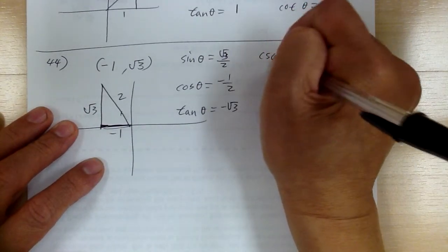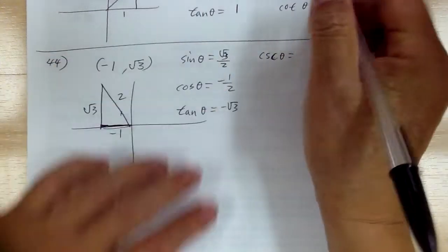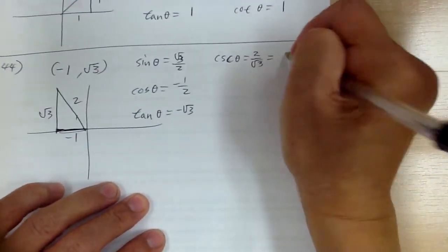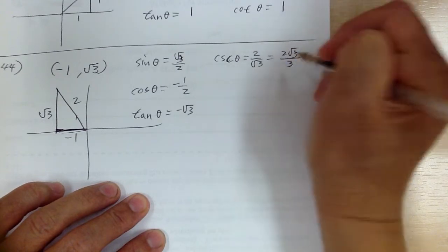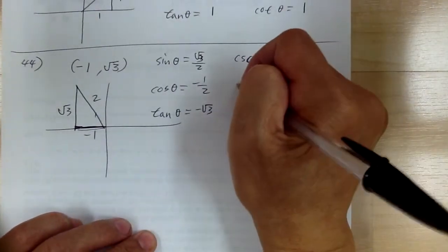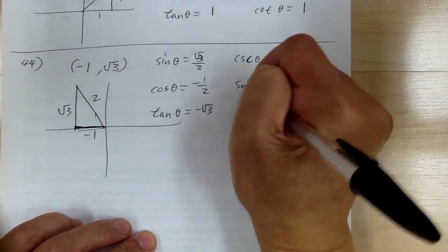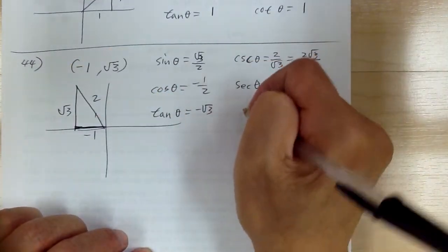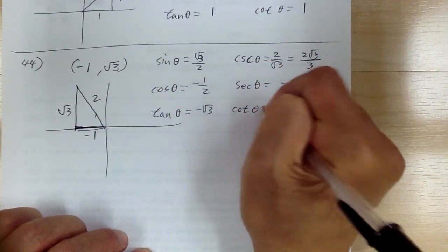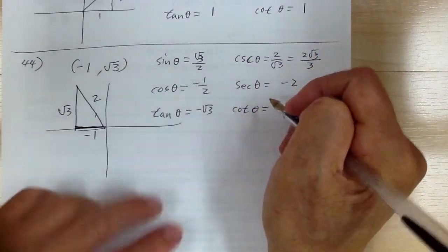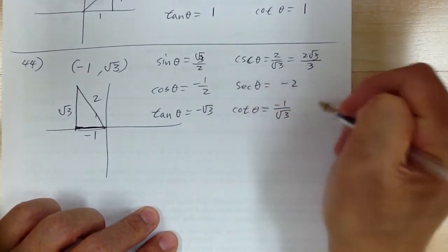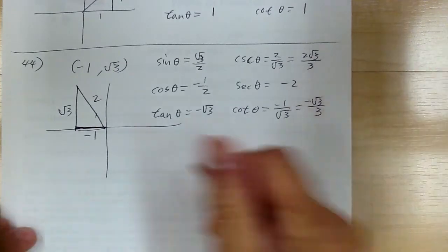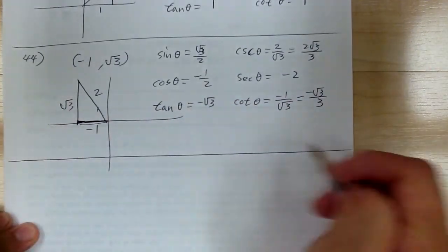Then you have cosecant: flip it over and you get 2 over √3, which equals 2√3 over 3. For secant, flip it over and you get negative 2. Then cotangent: flip it over and you get negative 1 over √3, which simplifies to negative √3 over 3. That's number 44.